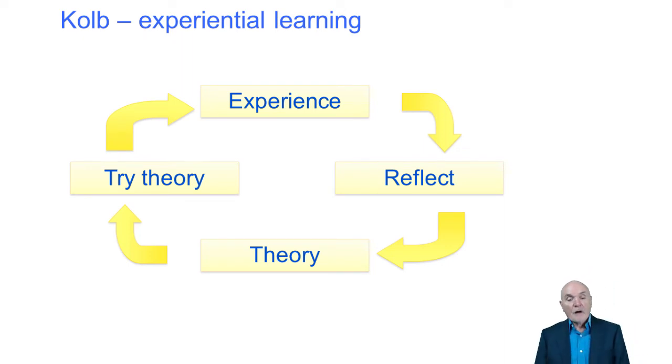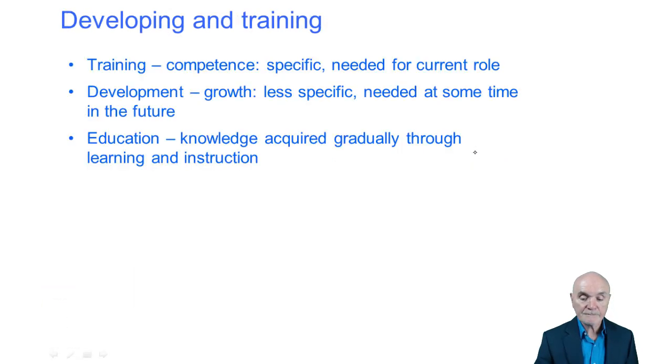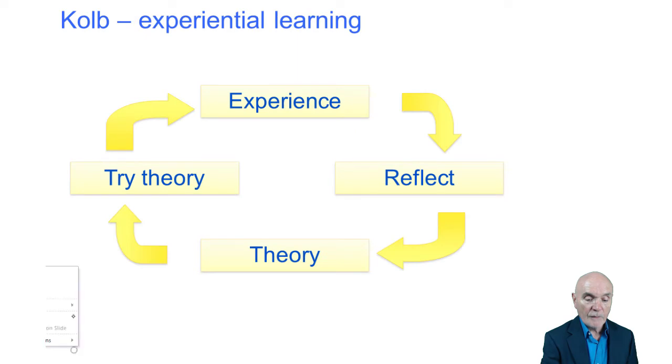The second theory is that of Kolb and what he called experiential learning. Kolb says that we learn little by little by experience. Let's say our experience was that we pitched to a client and we didn't win the contract. That's the experience. So what we do is we go away and we think about it. We reflect.